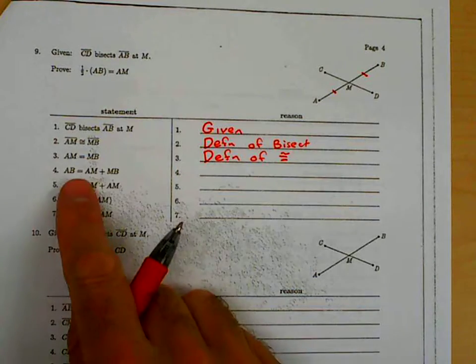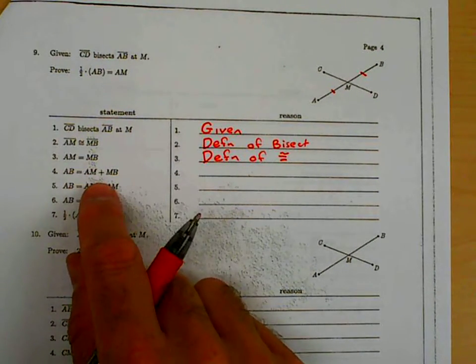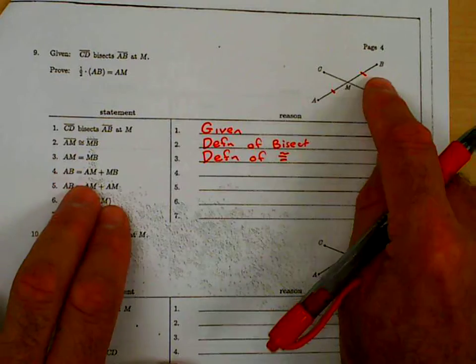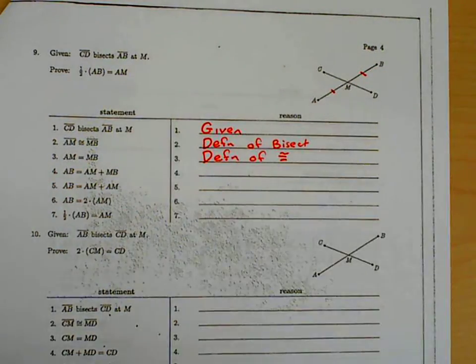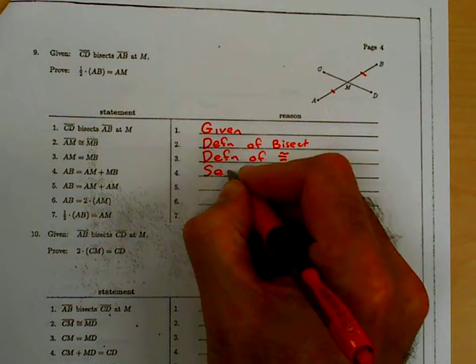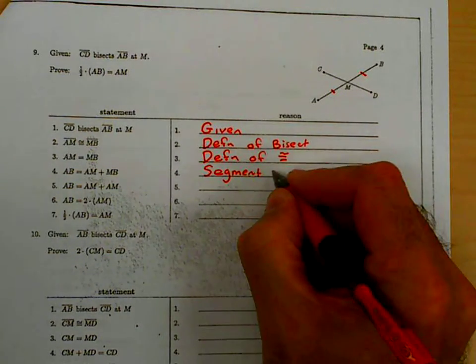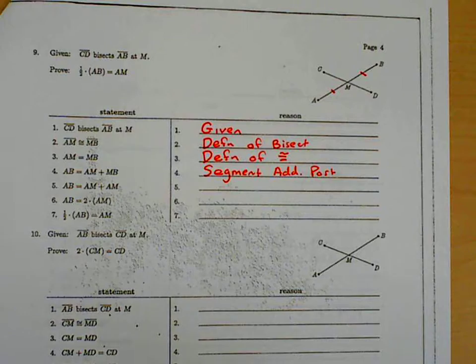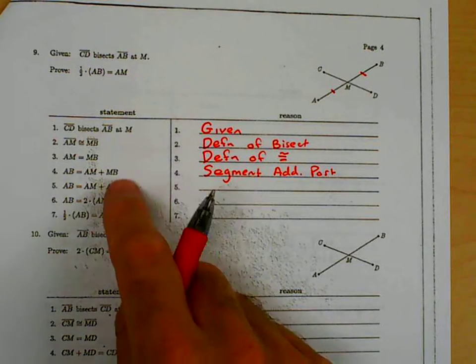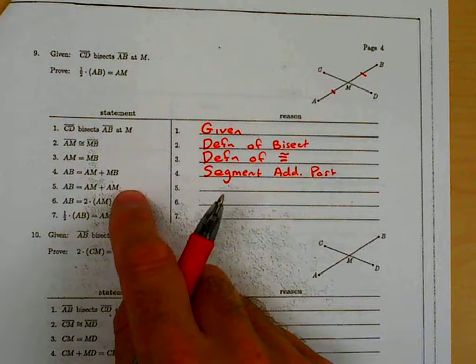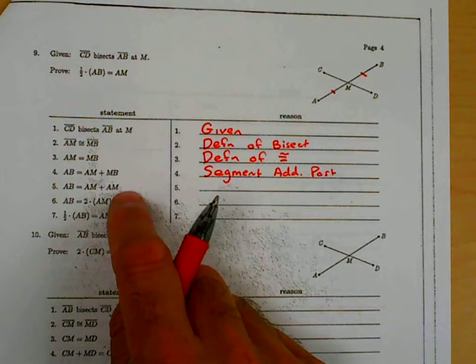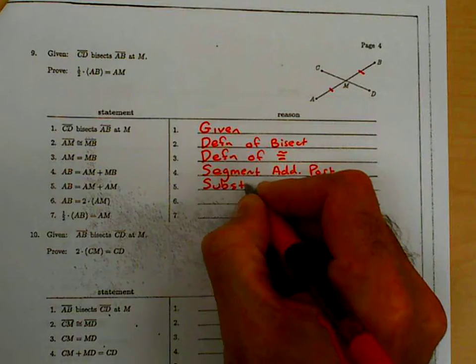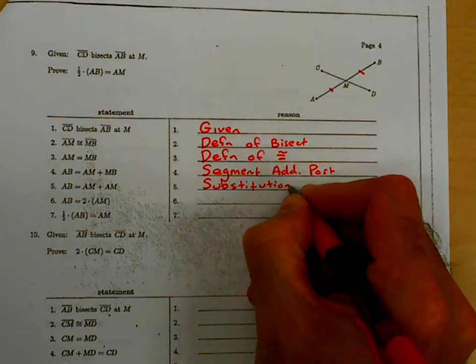Now, how do we get AB equals AM plus MB? I don't see anything up here that's really making that true. So then I look over here and I see AB is that bigger piece. AM is part of it and MB is part of it. That's segment addition postulate. Because we're adding the two smaller segments. And we get the larger one. Segment addition postulate. Now, how did it change one step to the other? Well, we substituted in AM for the MB. We substituted that in. So that's substitution. We knew those two things were equal. So we go ahead and swap them out for each other. So that's substituting.